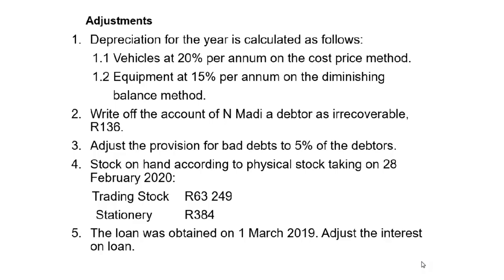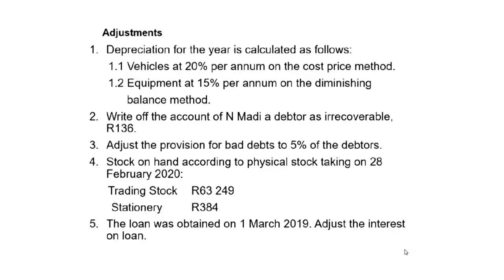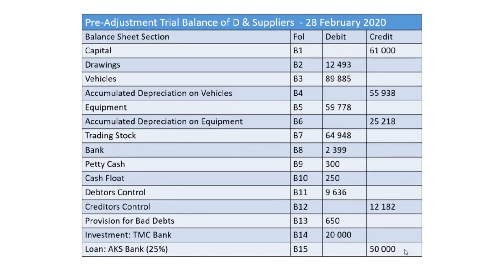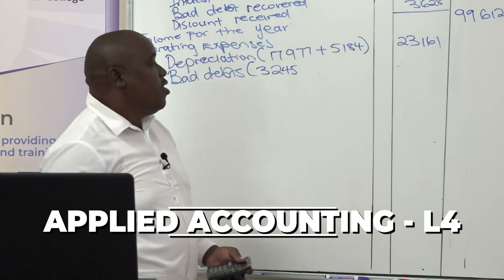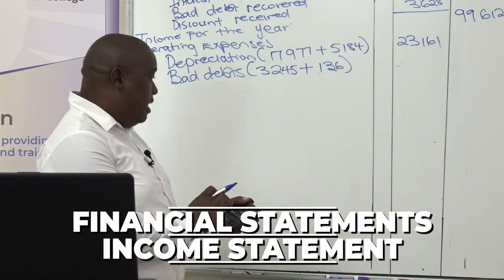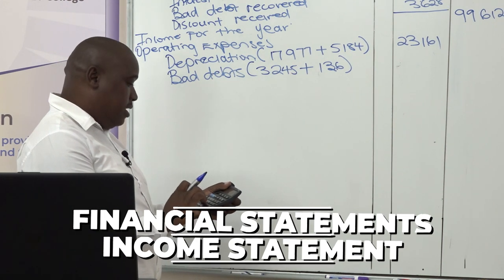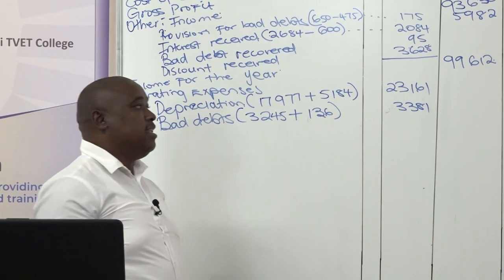We are done with adjustment number 1. Adjustment number 2 says to write off the account of N. Madi as irrecoverable — this is a bad debt. We go to the pre-adjustment trial balance; N7 shows a total of 3,245. We add the amount from adjustment number 2, which is 136, so the total bad debt is 3,245 plus 136, equalling 3,381.